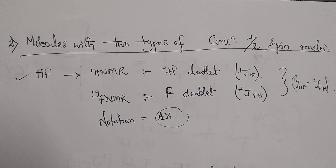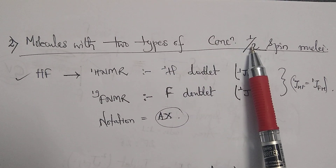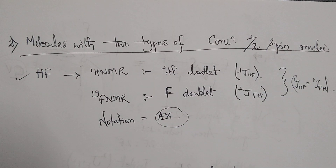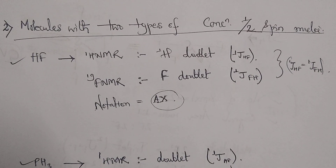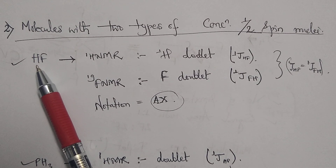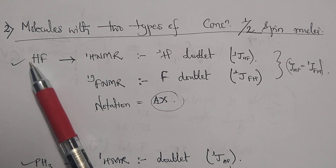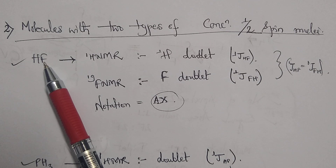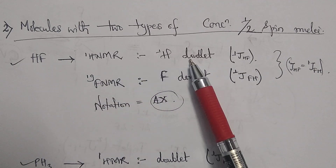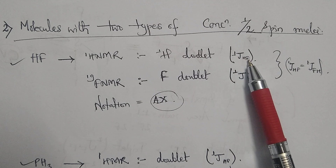The second category is the NMR of molecules with two types of half-spin concentrated nuclei. We will introduce this with the example of the HF molecule, where both the proton and fluorine are half-spin concentrated nuclei. When we do the proton NMR we will get the doublet signal for this one proton with the coupling constant of one bond, that is 1JHF.